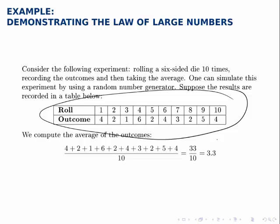So after ten rolls, we've gotten pretty close. We got to 3.3. But the law of large numbers says if we do this more and more times, we should get closer and closer to the average of 3.5.